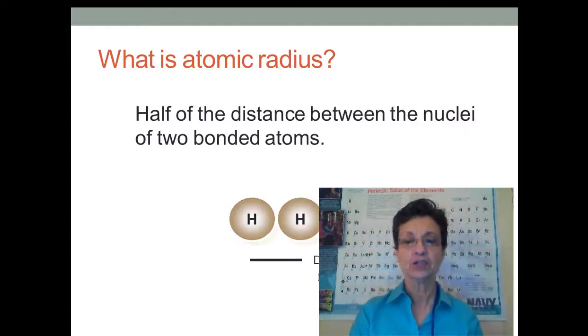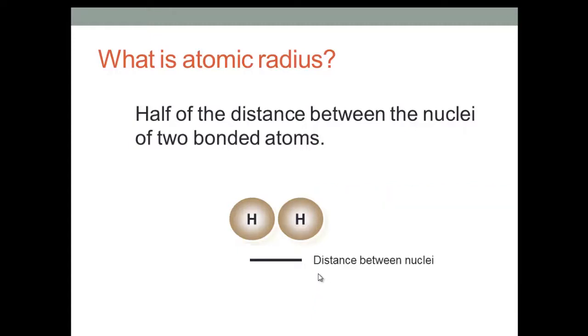Why is that? Well, it's very hard to pinpoint where the atom ends because remember the cloud shows the probability of finding electrons. So 90% of the time this is where the electrons will be located. We measure the distance between two nuclei when they are bonding, and the atomic radius is half of that.